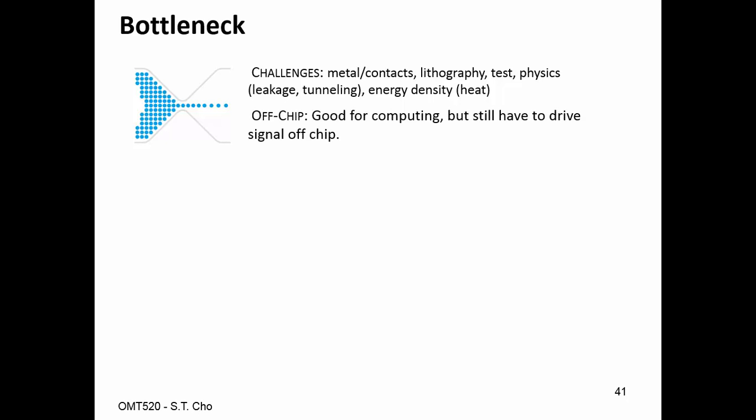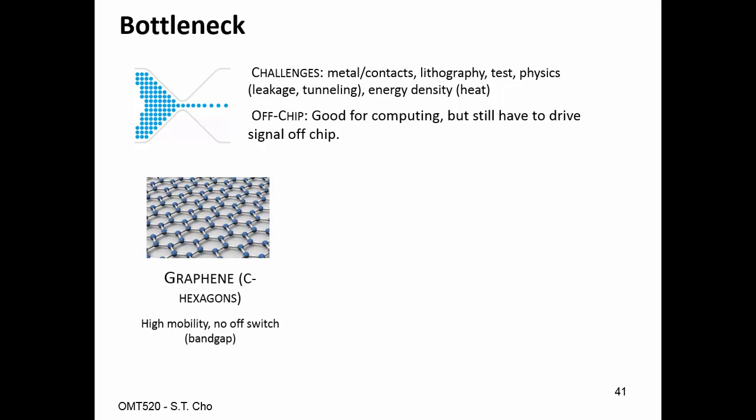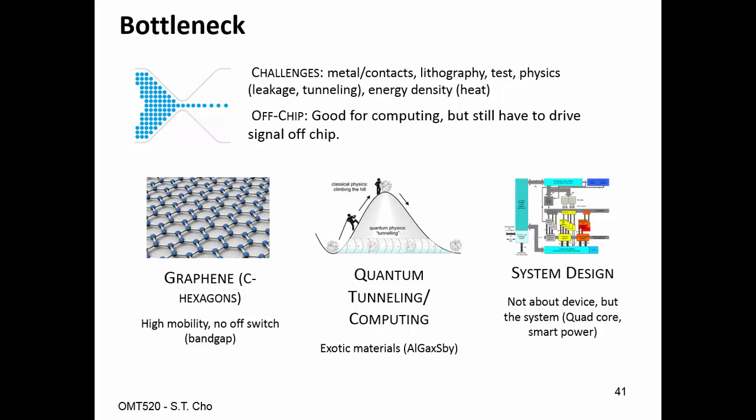The bottleneck on all this is you're just getting too small. The big challenge is now that everything's so small, you have to drive all that current into a load, and the outside world is much bigger than the internal world. They've been trying to work on alternative technologies like graphene. The problem is graphene is very fast, but you can't shut it off. Quantum tunneling computing - the idea is there are multiple states electrons can exist in, so instead of being 0 and 1, now you could be 0 to 6 or 0 to 8. But they require exotic materials, and those exotic materials are expensive.